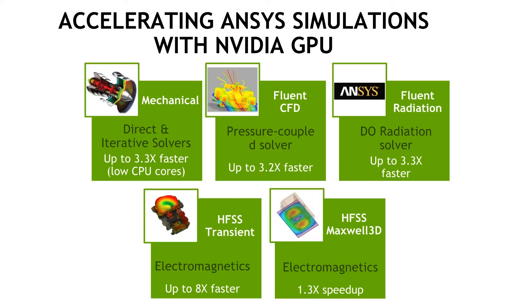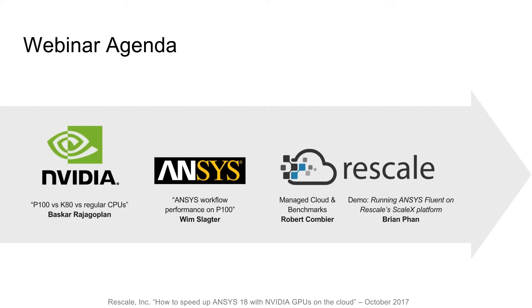This slide summarizes ANSYS solutions we have run in-house. From a performance standpoint, we see a whole range of improvements across the board — anywhere from about 30% speed-up in the case of Maxwell 3D, all the way up to 3.3x faster, which is more than 330% faster than a CPU-only configuration. Performance will vary based on the size of your problem and how well it lends itself to GPUs, but these results are based on a minimal set of models, and end customers with a wide range of models have the potential to see performance well beyond what's listed here.